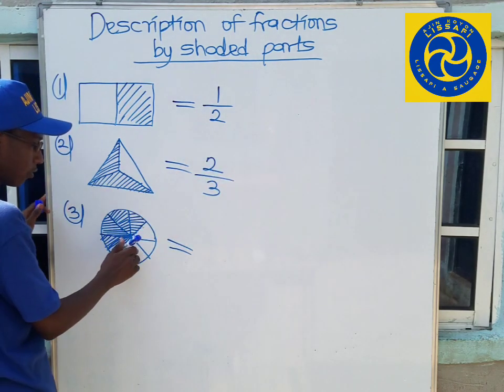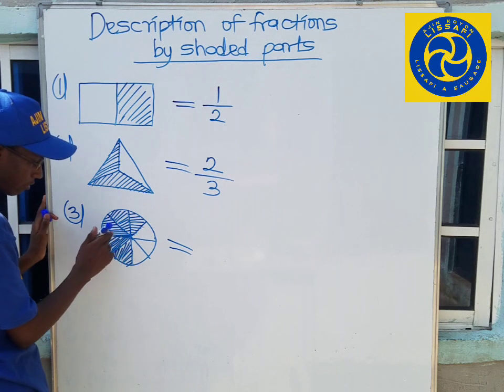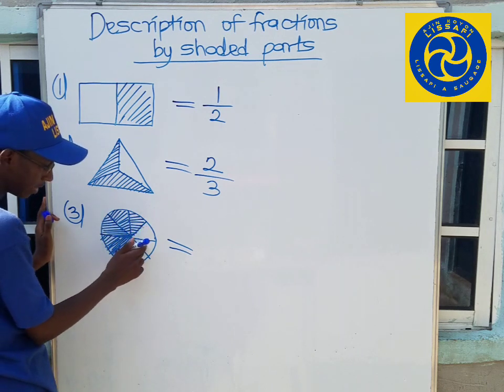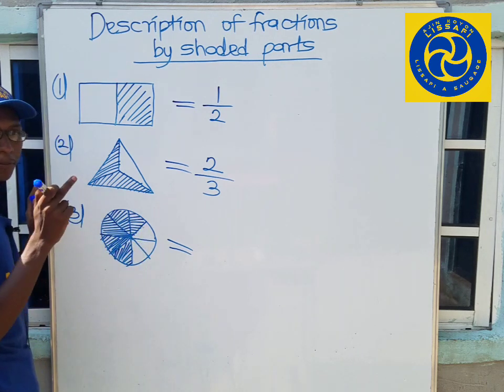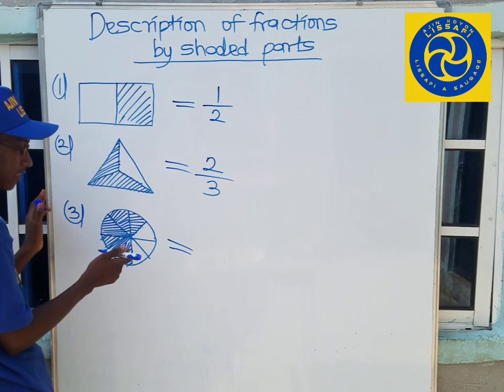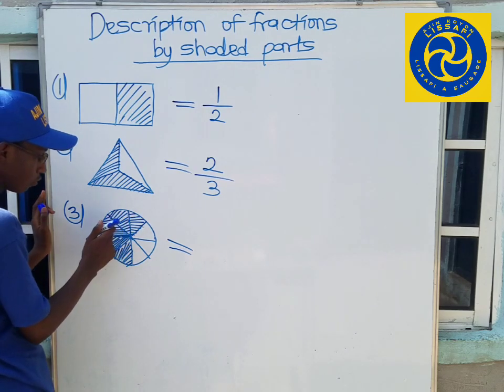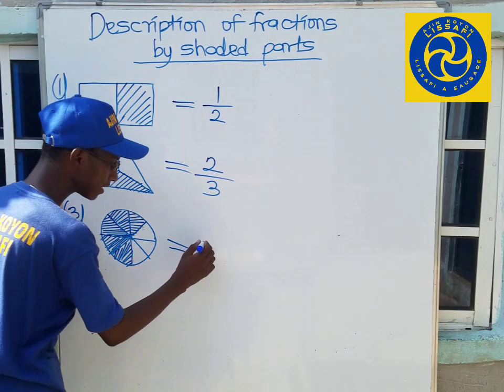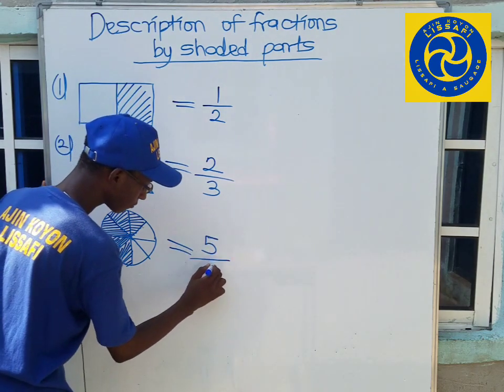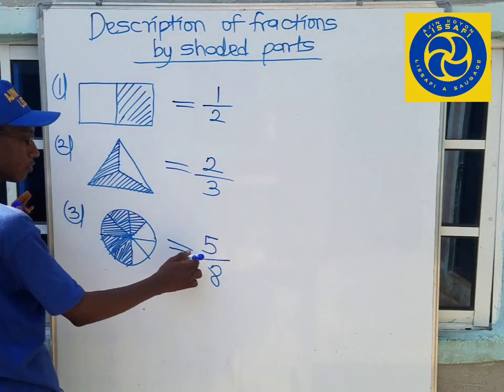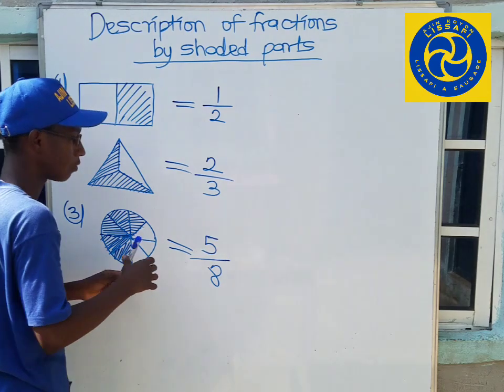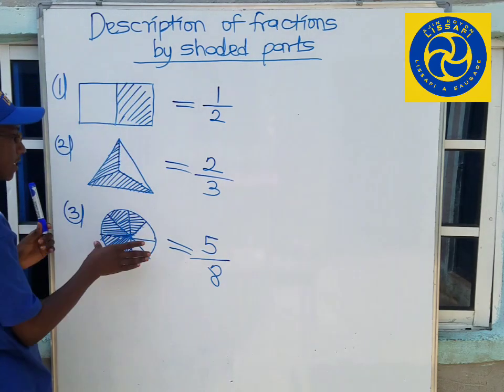In this next example, there are eight parts. If I shade five out of eight parts, the fraction we write is five over eight. So now I have shown you how to describe fractions by shaded parts.